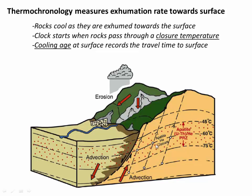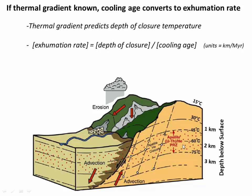That clock would start as the rock passes through the 65 degree isotherm. When that rock eventually makes it to the surface, it has some cooling age. That cooling age essentially records the amount of time it took the rock to travel from 65°C up to the surface. Using the thermal gradient in Earth's interior, we can convert the closure temperature into a closure depth. In this example, a closure temperature of 65 degrees Celsius has a depth of roughly 2 kilometers. Keep in mind, thermal gradients can be different within Earth's interior, so 65 degrees Celsius might occur more shallowly or more deeply with a different thermal gradient.